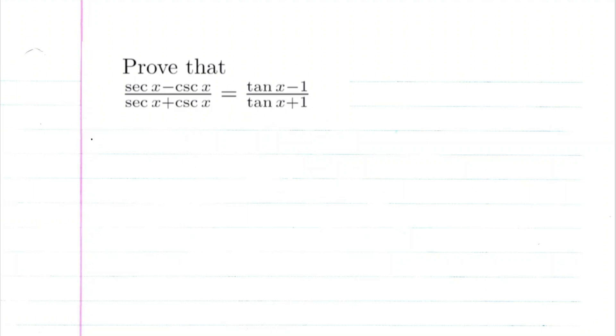Let's go ahead and get started on the proof. With these types of proofs, we always choose the more complicated side and then go to the least complicated side.